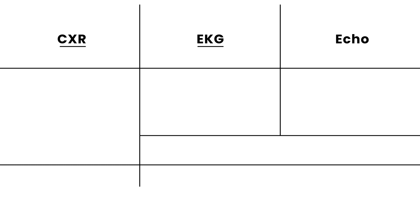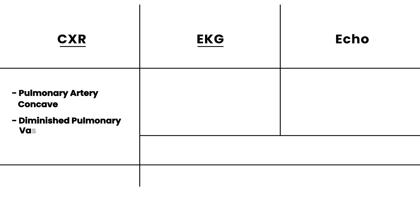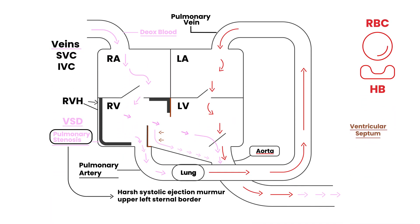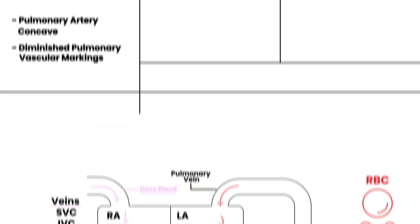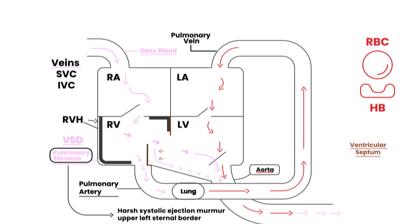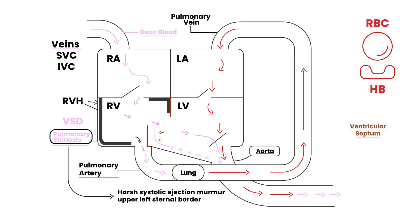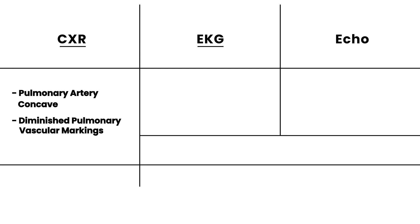The chest X-ray is going to show a pulmonary artery that is a different shape — it's going to be concave. The chest X-ray also shows diminished pulmonary vascular markings, meaning less blood flow coming through the pulmonary artery. And if there's less blood flow, these vascular markings will be diminished.